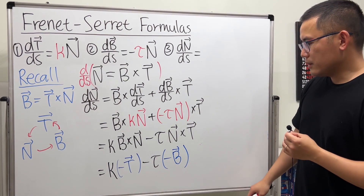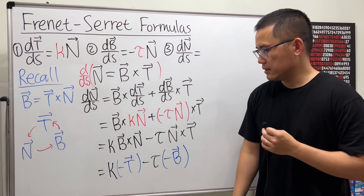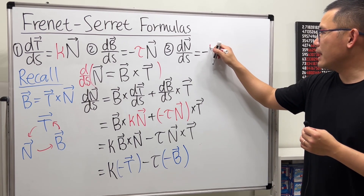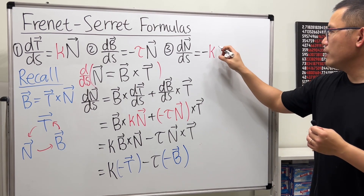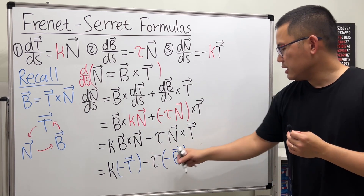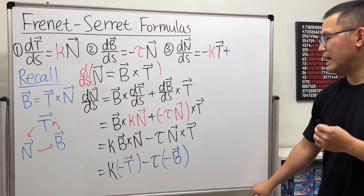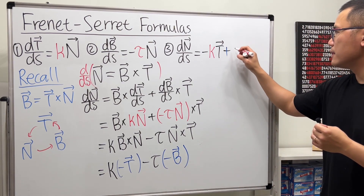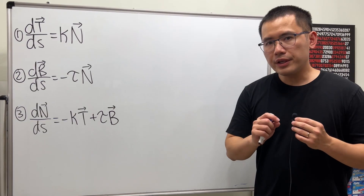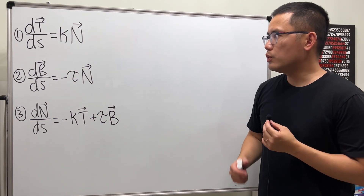Taking care of the negative signs, the final result for dN/ds is: negative kappa times the unit tangent vector T, plus tau times the unit binormal vector B. So dN/ds = -κT + τB.